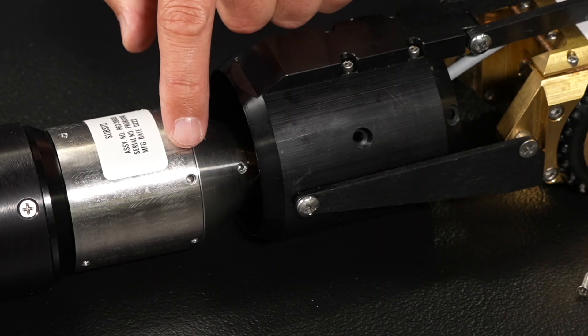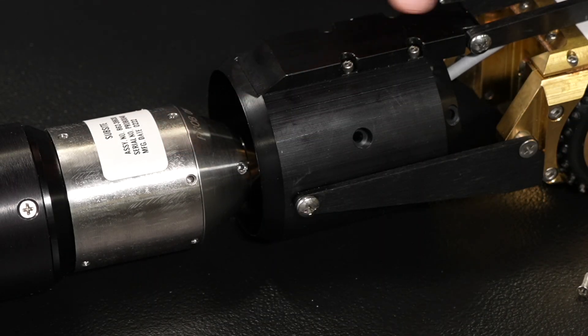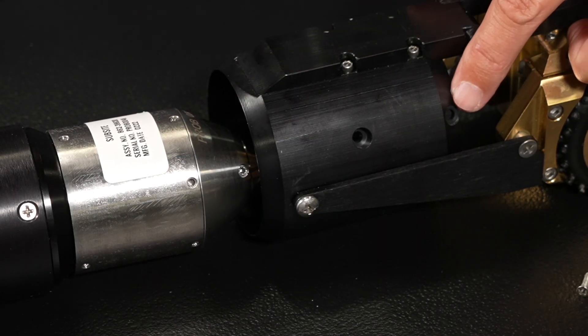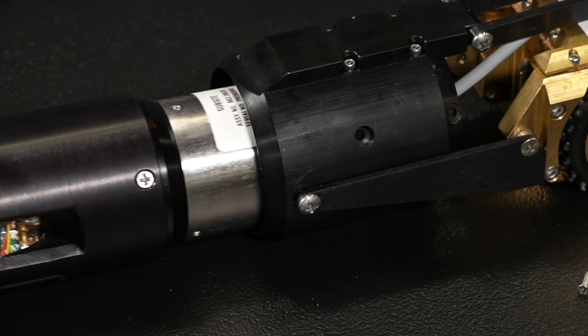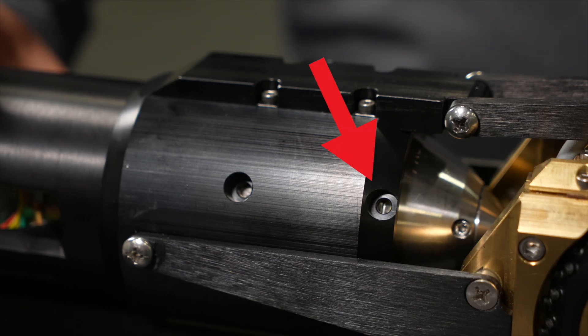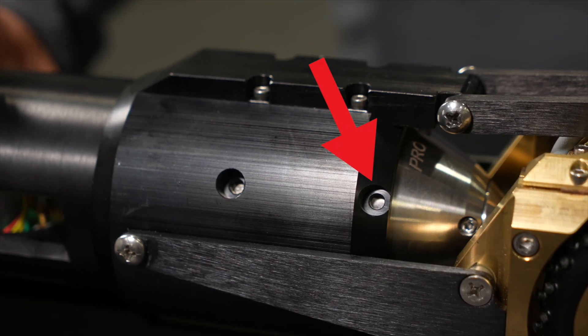There are three screw holes in the sides of the back of the Omnistar that you will line up with the matching holes in the Mighty Mini's camera sleeve. Align the screw holes in the probe to the holes in the camera mount.